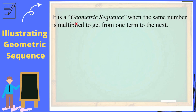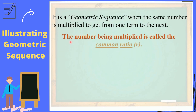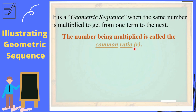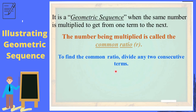It is a geometric sequence when the same number is multiplied to get from one term to the next. The number being multiplied is called the common ratio, denoted by R. To find the common ratio, divide any two consecutive terms.